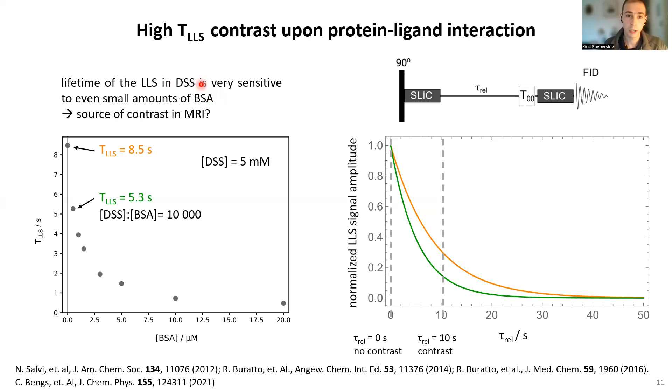Apparently they bind to each other, and this can be observed by many NMR techniques. But it turns out that if we perform titration experiments and measure lifetimes of long-lived states, we observe very strong contrast in actually incredible ratio of concentrations.